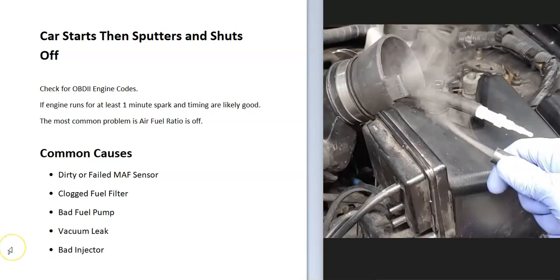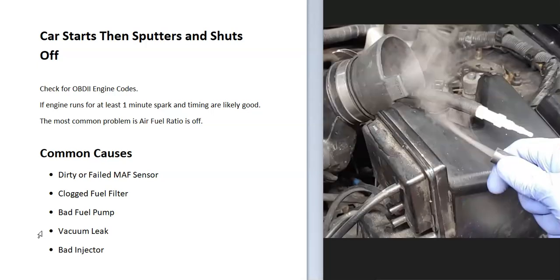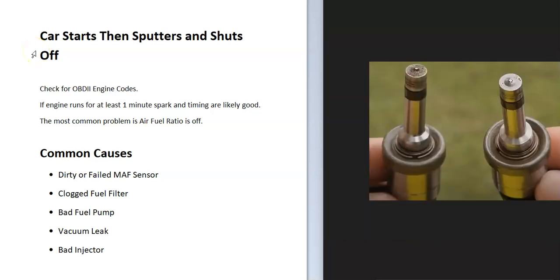The fuel pump could also be going bad — it's just not pumping correctly — and a fuel pressure test is the main way to test that. Another thing that could cause this problem is a vacuum leak somewhere on the intake, because it throws off the air-fuel ratio mixture. A very common method to find a vacuum leak is to use a smoke machine — you feed smoke into the intake, and wherever the smoke comes out, you know there's a leak. There are low-cost smoke machines on Amazon or eBay, and you can even make one yourself for less than ten dollars.